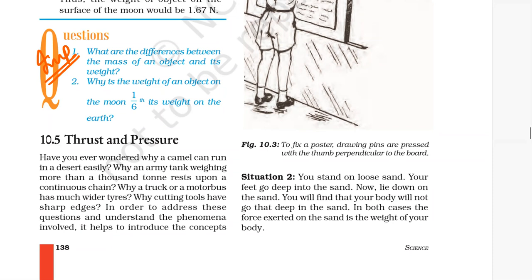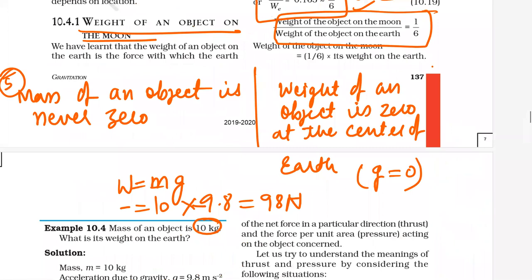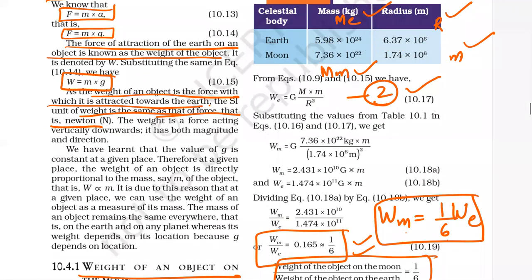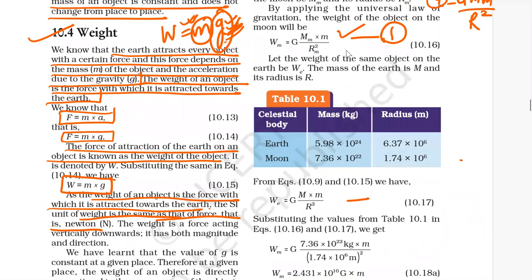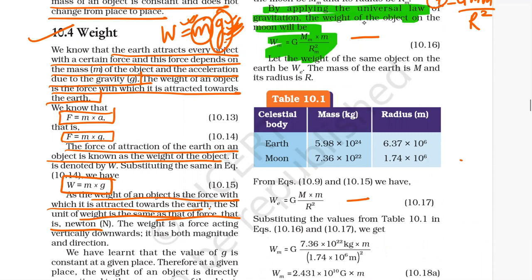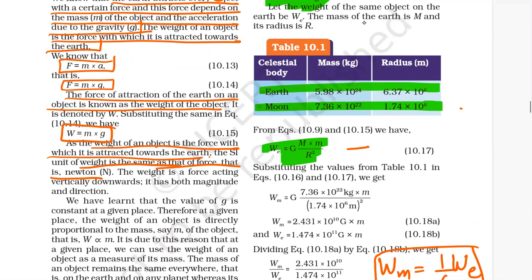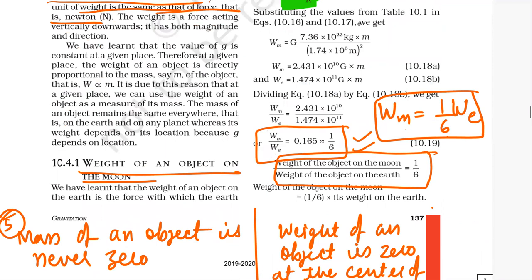Why is the weight of an object on the moon 1/6 of the weight on earth? To derive this, first write: by applying the universal law of gravitation, write the expression for weight on moon, then for weight on earth, then write the values for mass of earth, mass of moon, radius of earth, and radius of moon, and finally write the relationship that the weight of the object on the moon is 1/6 the weight on earth.